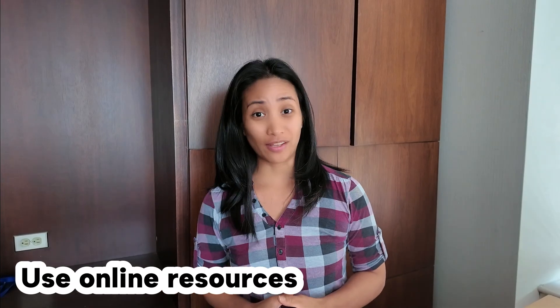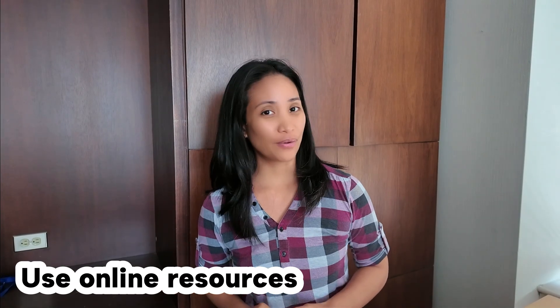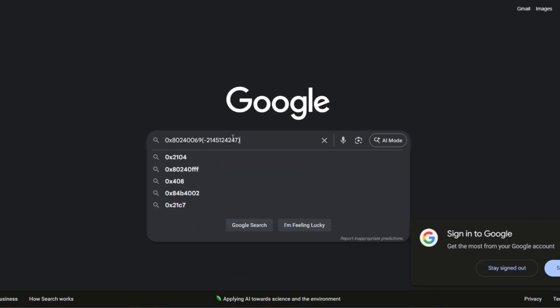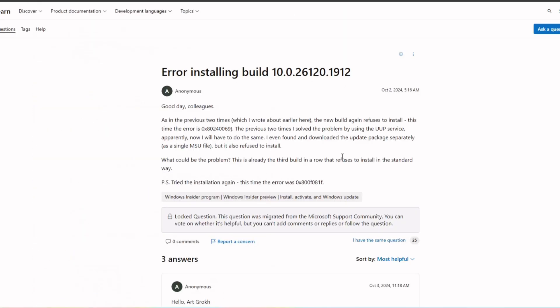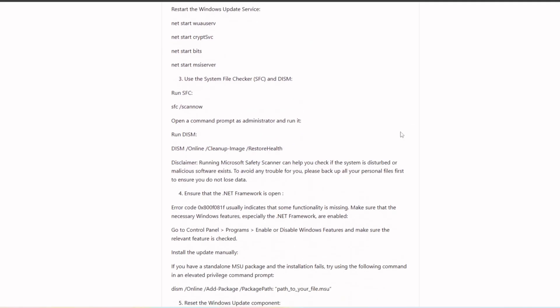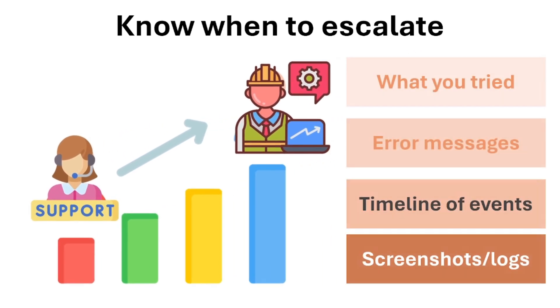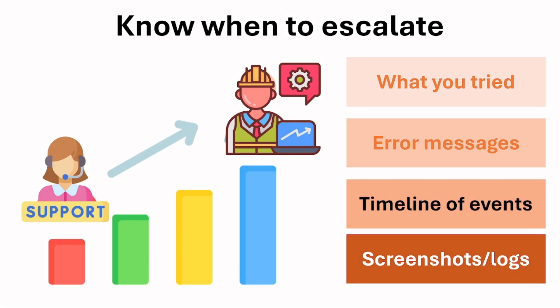But what if you tried everything and it still didn't work? Another approach is to use online resources. It's perfectly okay to Google and look up unfamiliar IT issues, as long as you know what to search for — you can search the exact error message or code, or go through vendor documentation. And when you're hitting a wall and have exhausted your resources, you can always escalate to senior level, but make sure to provide documentation of all the steps you've already done: what you tried, error messages, timeline of events, screenshots, and logs.